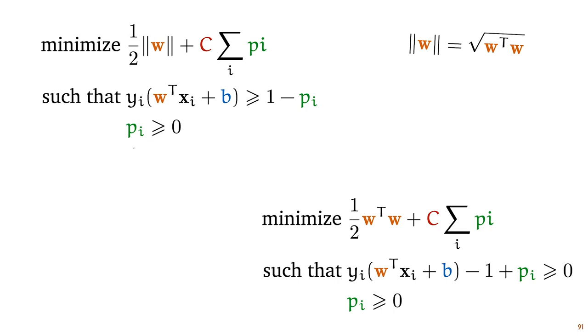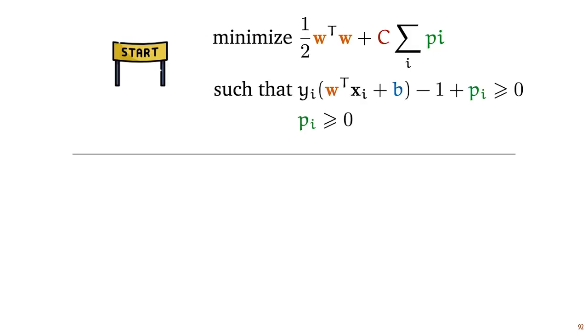So we will instead minimize the dot product of w with itself. Second, for this first constraint, we move all terms to the left so that all of our constraints are in terms of functions that are required to be larger than zero. The derivation of our new objective is a long and complicated one, so let's first set up what we plan to achieve.